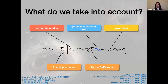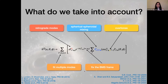We also take into account the spherical-spheroidal mixing coefficient, and we look at different overtones for our fits. There are quite a few papers that have looked at all of these key ingredients, if not more than one combined. What I will show here is two things: first, how we fit multiple modes and how our algorithm works; and then I will tell you a little bit about how we fix the BMS frame. These are the two main features of our paper.